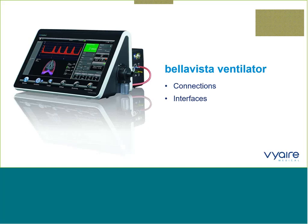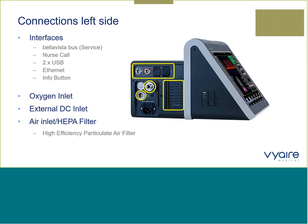We're going to start with the connections and interfaces with the Bella Vista. On the left-hand side you have the ports. You have your Bella Vista bus ports, which are primarily for service engineers. There's the nurse call control. Behind a small cover there are two USB ports, so you can potentially control your aerogen from there, or export and import data into the device. There's an Ethernet port for connectivity. The Bella Vista is offered with an array of gas inlets — that might be DISS, NIST, or AFNOR, for instance.